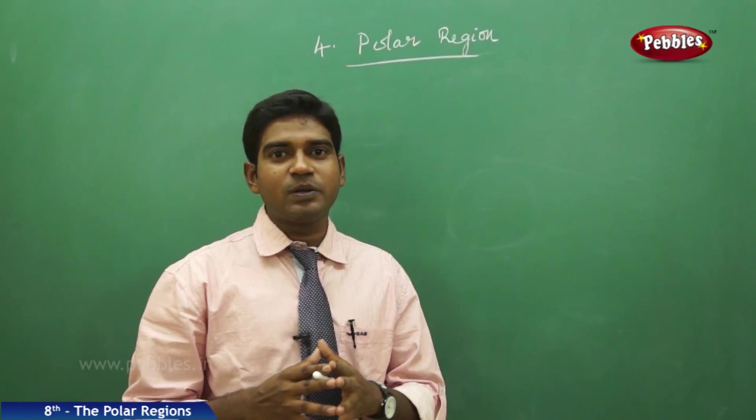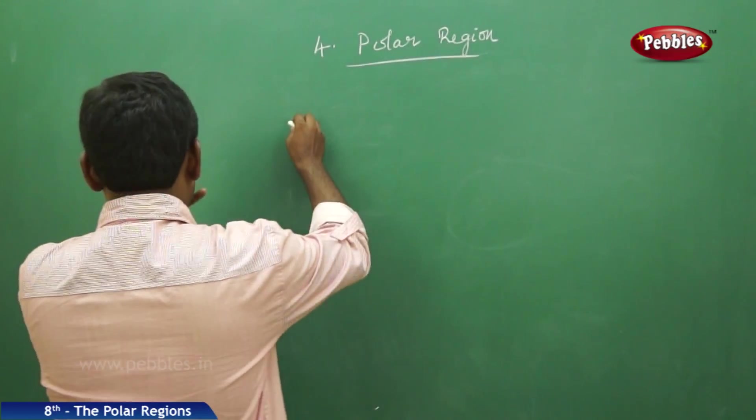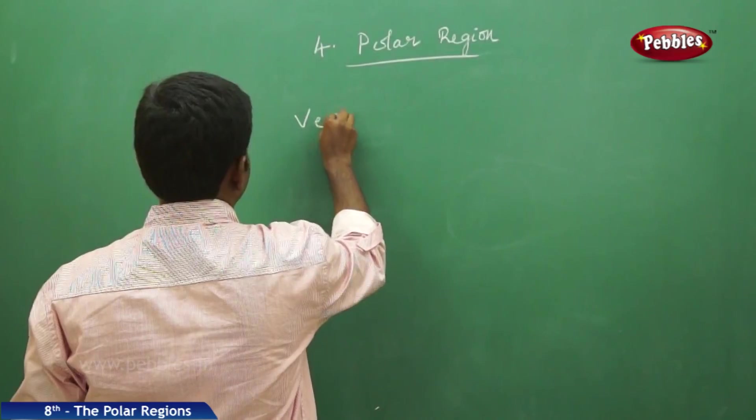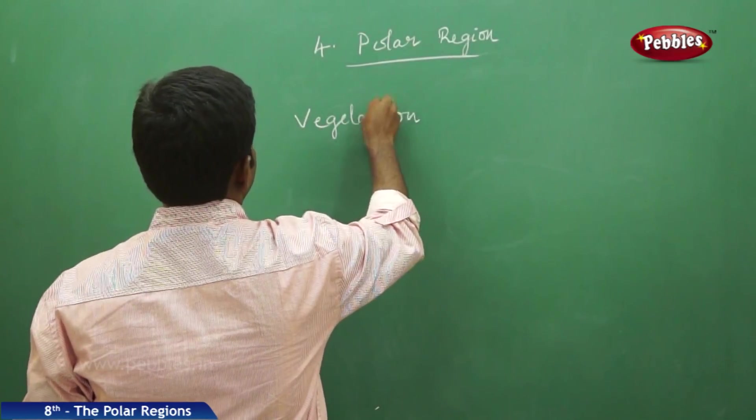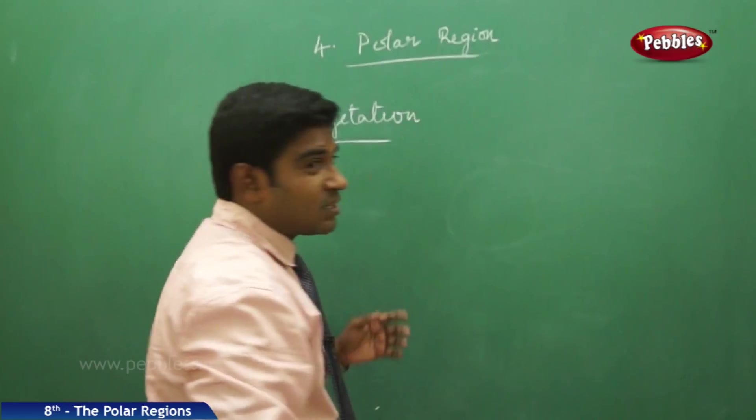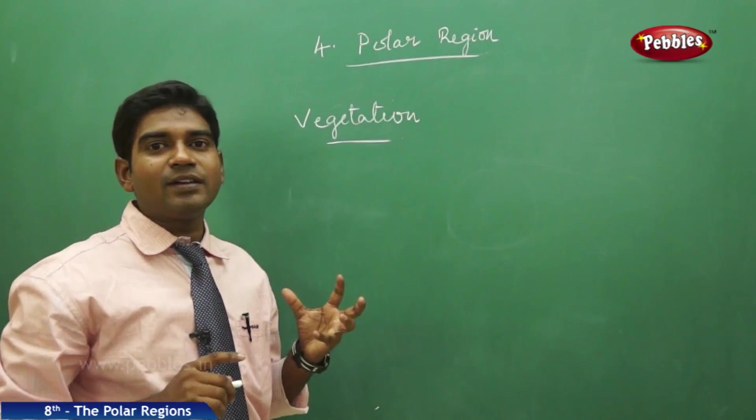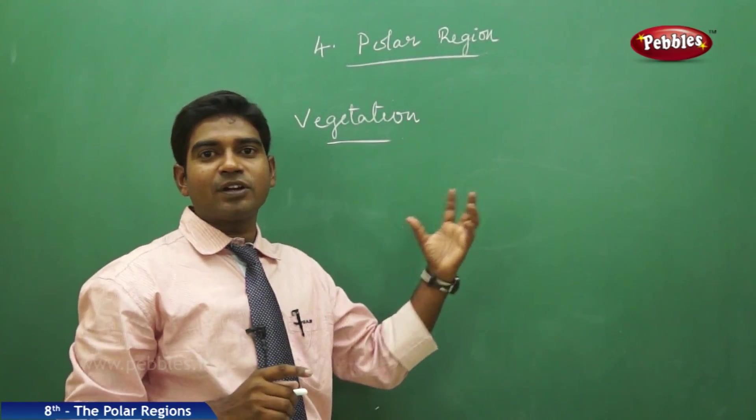Why the vegetation is not possible here? I think you all know what is vegetation. Vegetation is a study of the plants and the crops which grow in a particular region.